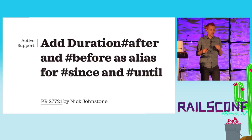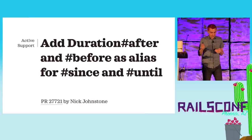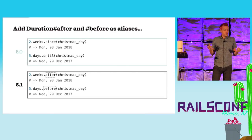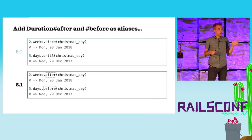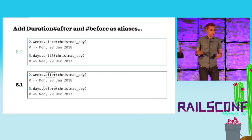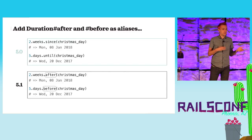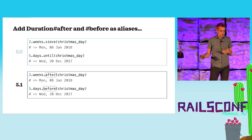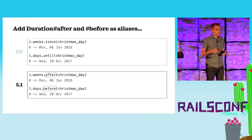ActiveSupport::Duration has two methods called since and until, and now they have aliases: after and before. If in your code you're writing 2.weeks.since(christmas_day), now you can say 2.weeks.after(christmas_day). It's the same thing but it might sound more natural in English. Similarly, 5.days.until(christmas_day) you can now write as 5.days.before(christmas_day). Maybe in your tests this is something you prefer.